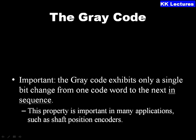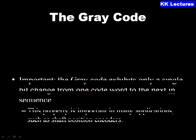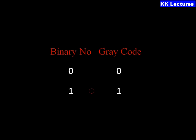We are mainly using Gray code in our subject to solve Boolean functions and for simplification of Boolean functions using K-maps. Gray code is also called a reflected code or cycling code, and it is mainly constructed using the mirror image process.